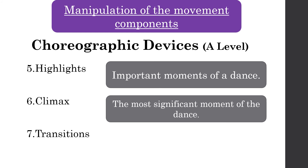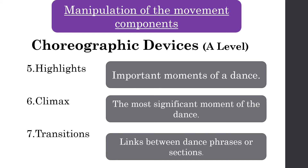Finally, choreographic device number seven: transitions — the links between dance phrases or sections. Make sure you have unique, exciting transitions so that they almost don't seem like transitions. We don't want to clearly see movement from one static section to another static section that halts the dance. We want smooth transitions that link to your dance idea. Pause the video here and write down these definitions.